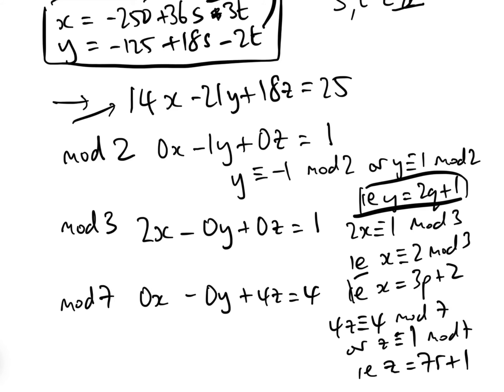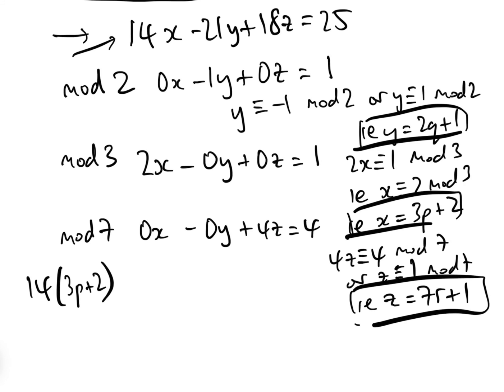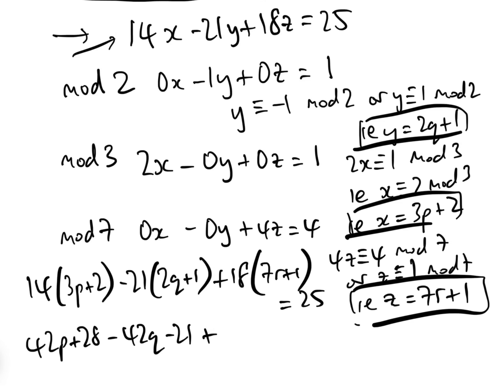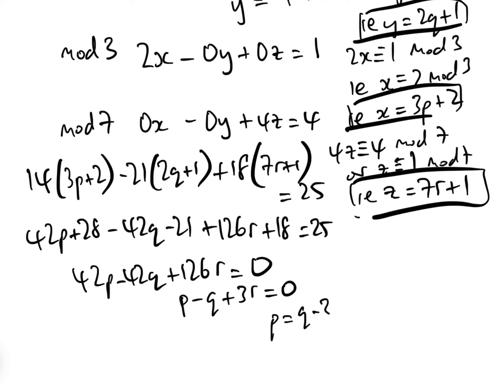Now what we can do is put these back into the equation here. We get 14 times (3P plus 2) minus 21 times (2Q plus 1) plus 18 times (7R plus 1) equals 25. When we expand all this out, we get 42P plus 28 minus 42Q minus 21 plus 126R plus 18 equals 25, i.e. 42P minus 42Q plus 126R equals 0. So dividing by 42, we get P minus Q plus 3R equals 0, and so therefore P equals Q minus 3R.